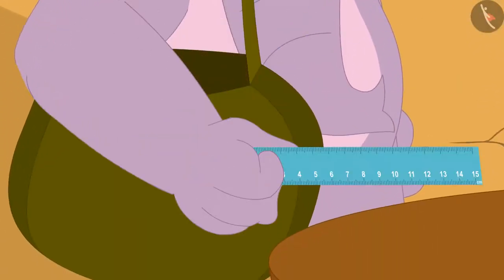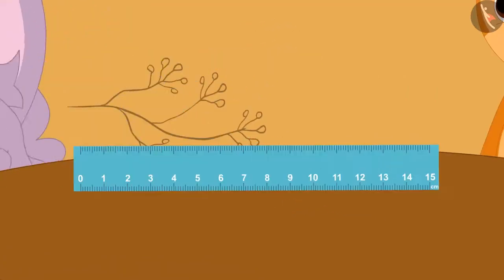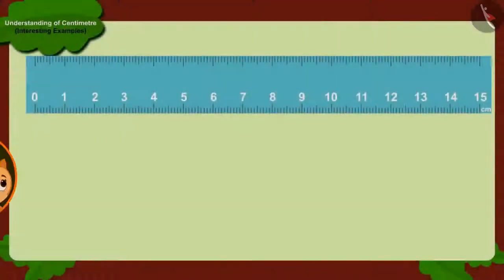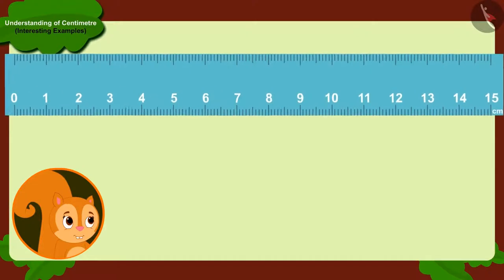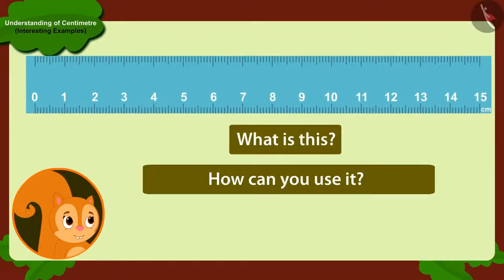Appu took out a plastic strip like this from his bag and placed it on the table in front of Chanda. Chanda asks him, what is this plastic strip and how can I use it to measure the length of objects in centimeters?